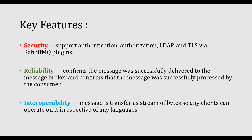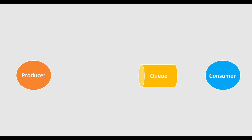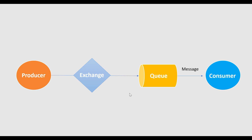Now let's understand how RabbitMQ internally works with an architectural diagram. In a traditional message queuing system there is one producer who publishes the message and one consumer who consumes it, and they talk to each other via a queue. But in RabbitMQ, the producer is not tightly coupled with the queue — there is one intermediate component between producer and queue called an exchange. The producer publishes to the exchange, and the exchange redirects the message to the corresponding queue.